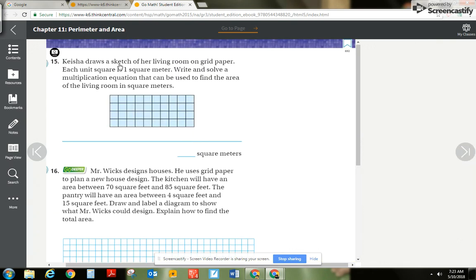All right, number 15. Kishi draws a sketch of her living room on grid paper. Each unit square is one square meter. I see square meter and I'm already thinking area, because area is the square, the space inside, right? And so I have a multiplication equation. That's also telling me multiplication because area is found by multiplying. That can be used to find the area of the living room in square meters. It really isn't too tough of a problem.